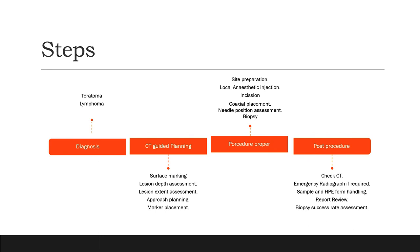The second step involves CT guided planning. Planning is the most important step of any biopsy because it will limit the number of approaches, which is very important for the patient. In CT guided planning, we do surface marking using the laser, then we do lesion depth assessment and extent of the lesion assessment using the actual 3D images on the console. We then plan an approach based on the depth and extent of the lesion from the surface, and plan a marker from where we should actually enter the lesion.